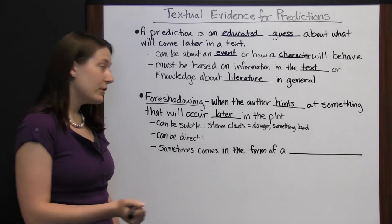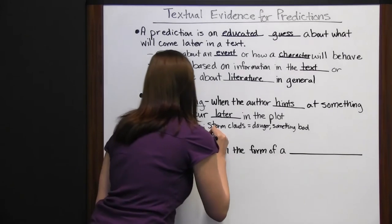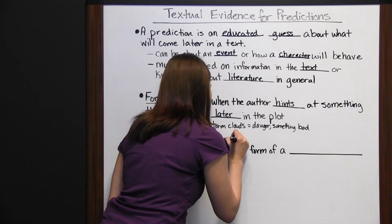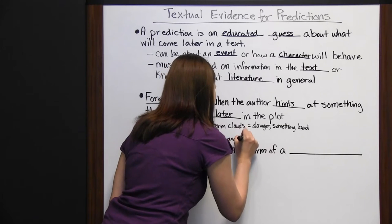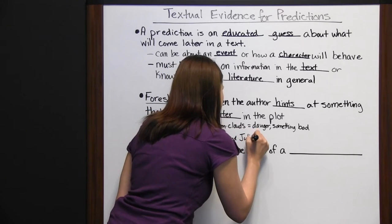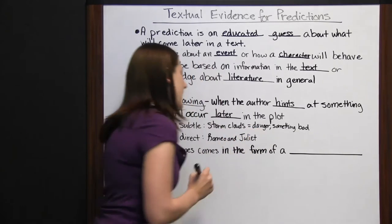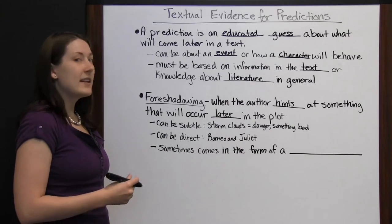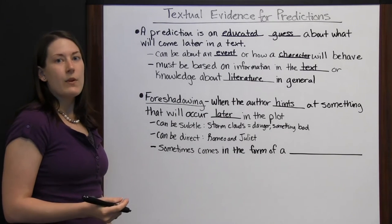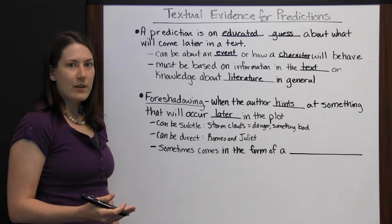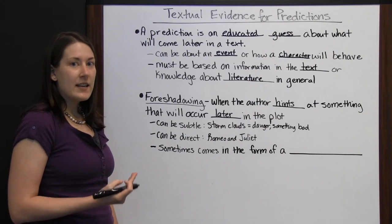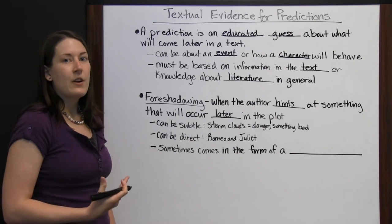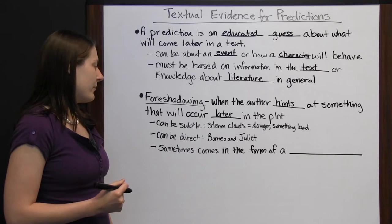However, sometimes foreshadowing could be more direct, as in Romeo and Juliet. They talk about how they would rather die than live without one another. And that was William Shakespeare's way of hinting that in the end, when they thought they might live without one another, they did end up killing themselves rather than live without the other one.